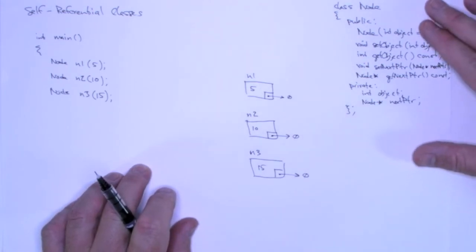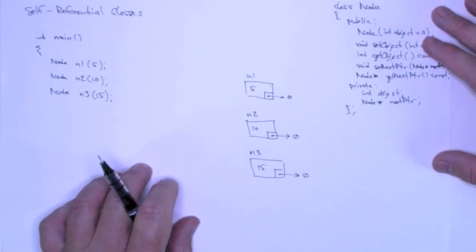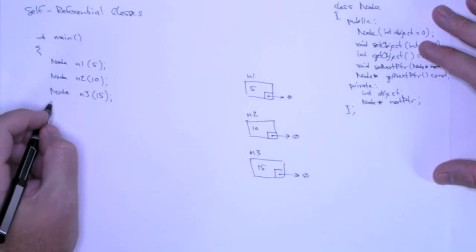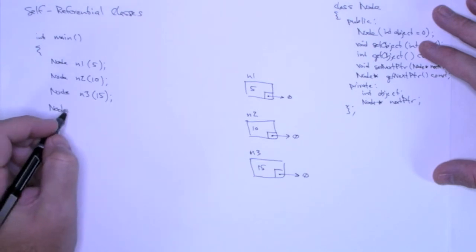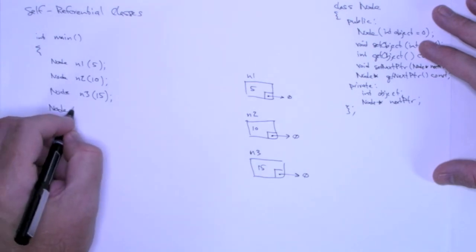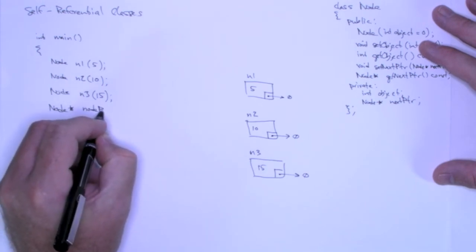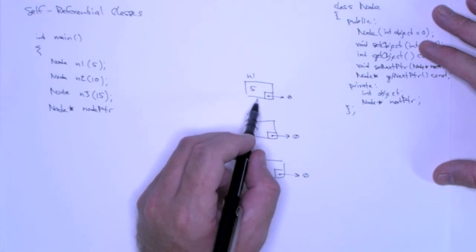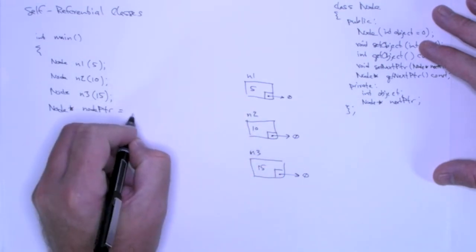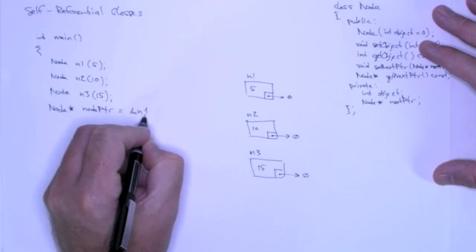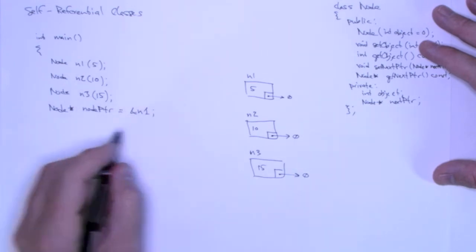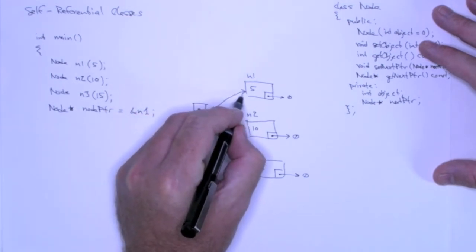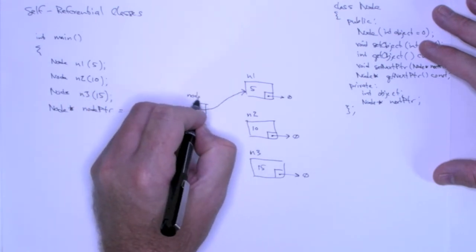So now I'm going to link these things together. The first thing I'm going to do is create a general pointer that I can use. I'll call this node pointer. And I want to start it off pointing to n1. So how do I make it do that? I can just use the address operator, n1. So after this, I have a pointer here that points to n1 and it's called node pointer.